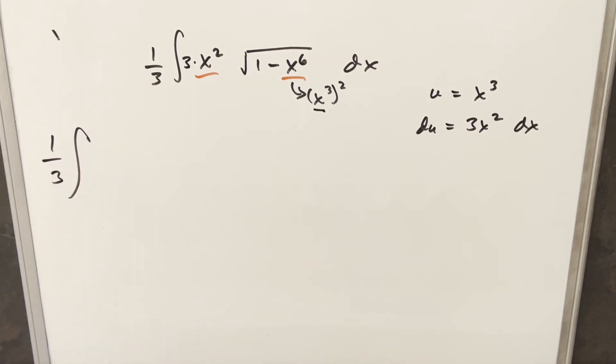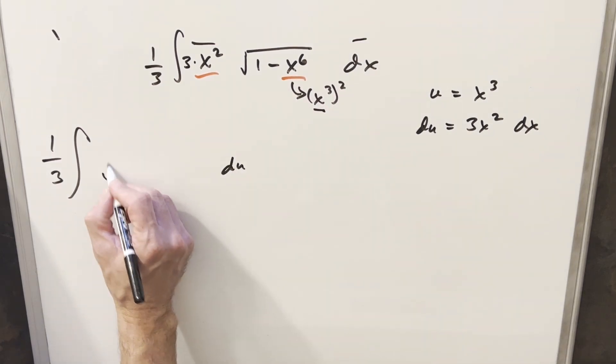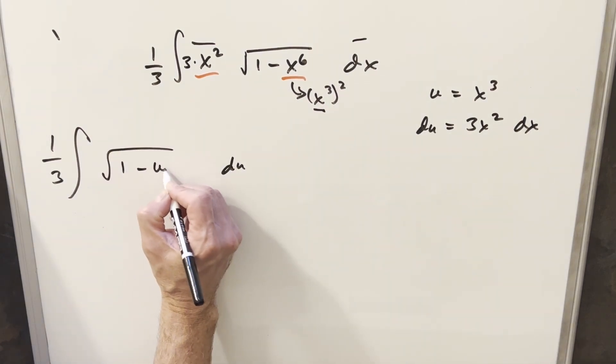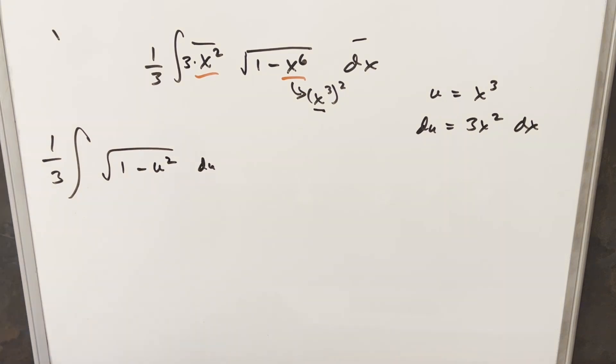And then we'll just go ahead and do this. So again, we have here and here our du. And then inside the radical, we're going to have just 1 minus u squared now. And now from here, this is actually a good place for a trig substitution. So that's what I'm going to do.